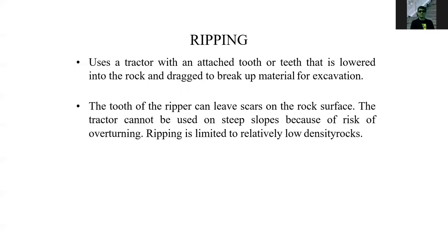Another type of rock excavation is ripping, using a tractor with an attached tooth or teeth that is lowered into the rock and dragged to break up the material for excavation. The tooth or ripper can leave scars on the rock surface. The tractor cannot be used on steep slopes due to the risk of overturning. Ripping is limited to relatively low-density rocks and is usually used in soft rock formations in areas where the equipment can maneuver easily.